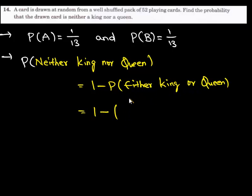Here, we have A and B as the events. So, probability of either king or queen is P of A plus P of B, since A and B are mutually exclusive events.